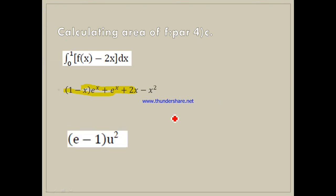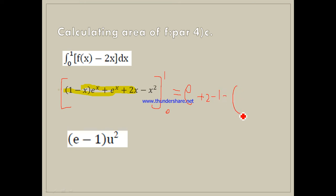Taking this between 0 and 1: substituting x = 1, we get (1−1)e¹, so that term is eliminated, giving E + 2·1 − 1² = 1. Minus the bracket: substituting x = 0 gives (1−0)·e⁰ = 1, plus e¹, and 1 + 0 − 0. The 2 and −2 eliminate, and we get E − 1 square units.